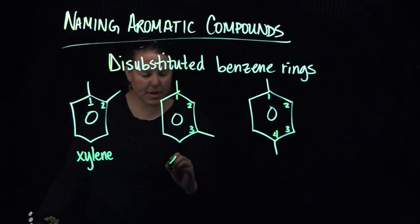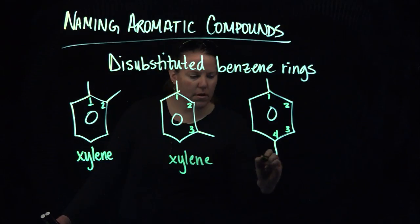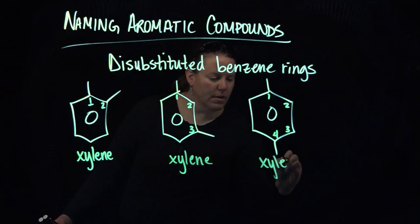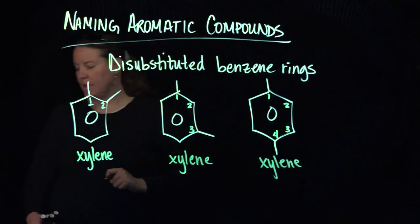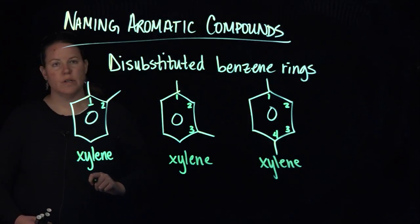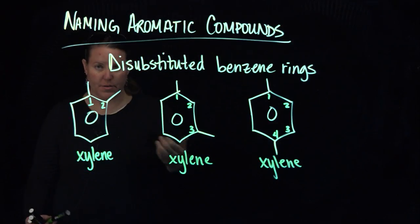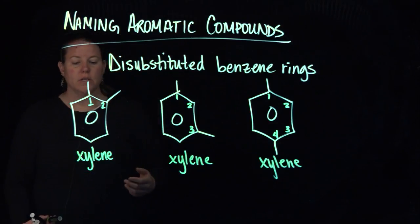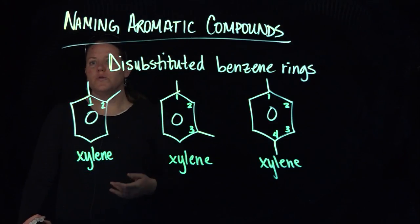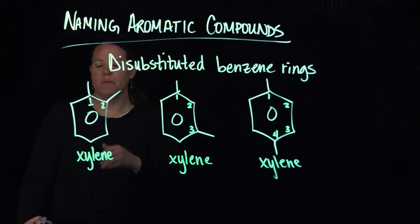All of these would be called xylene, but as you know, with all chemistry naming, that it is an extraordinarily bad idea to call two compounds that are actually different from one another the exact same name. So we could call this 1, 2-dimethyl xylene.